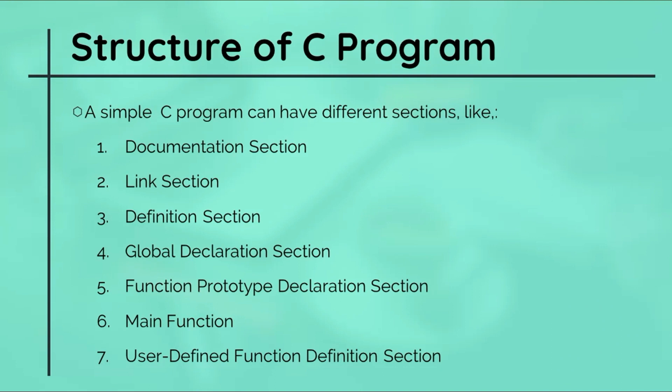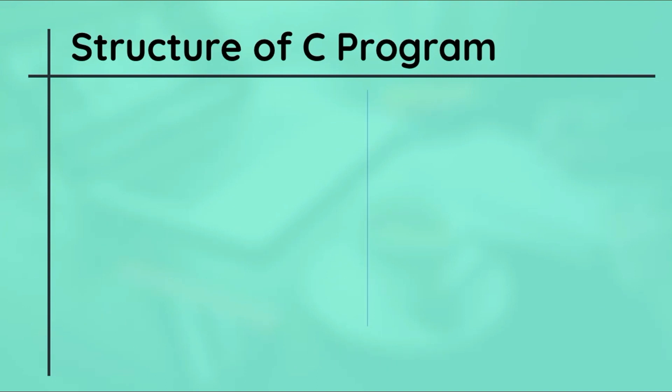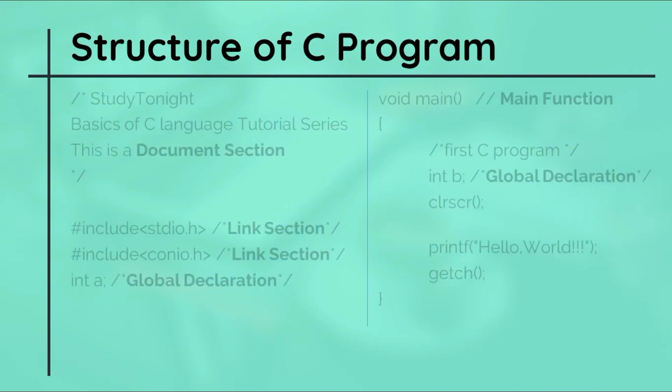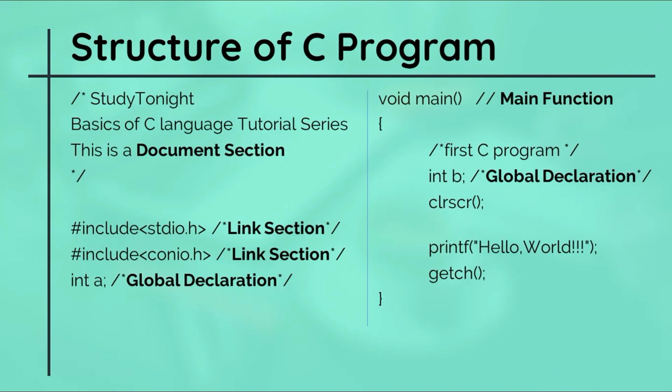We have a better understanding of various statements used in a basic C program. Let's try to understand these sections in a program with help of the C program we executed in our last video. Here is a basic C program with all the sections that we have listed in the previous slide that contain documentation section, link section, global declaration section, and main function.